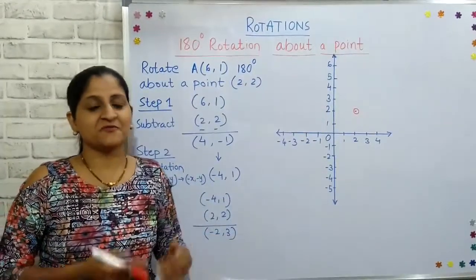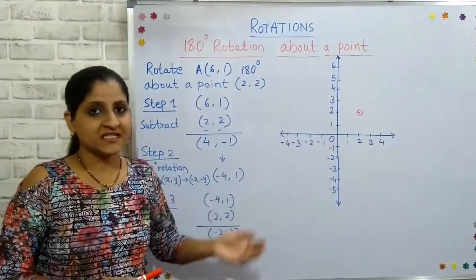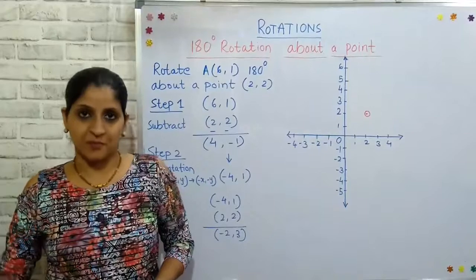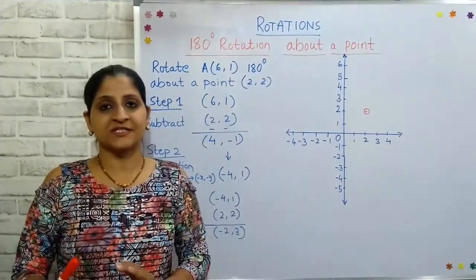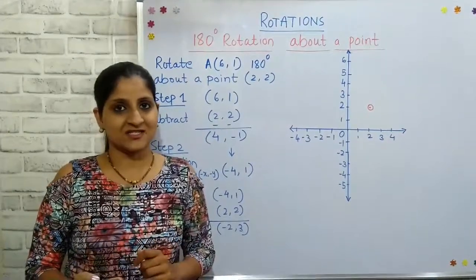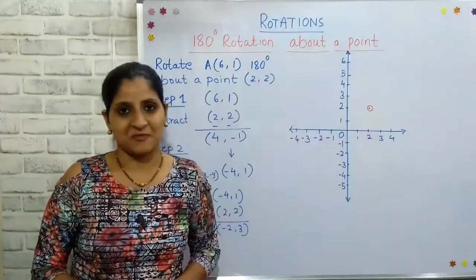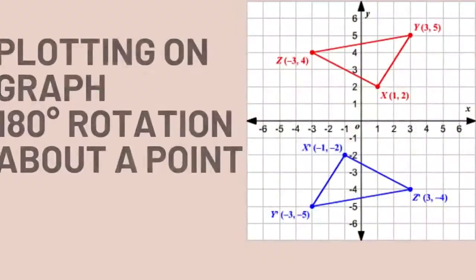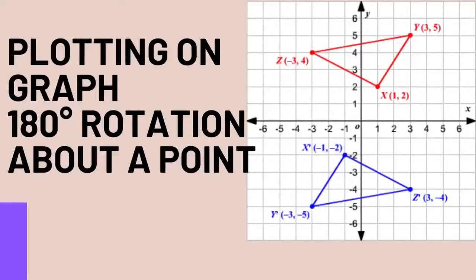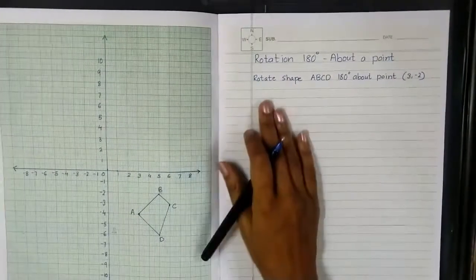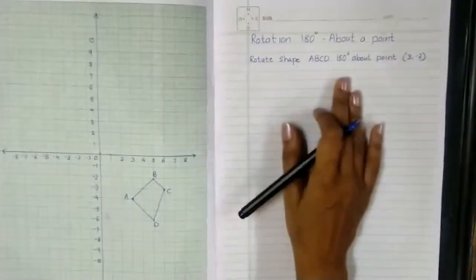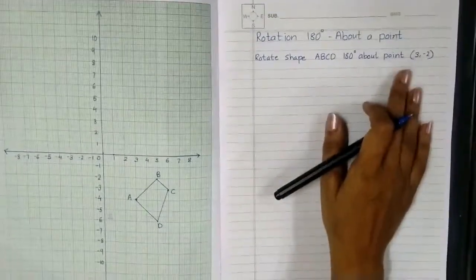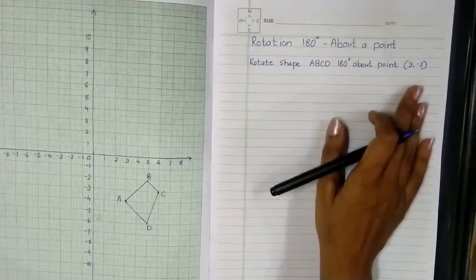Those are the steps involved while rotating a point 180 degrees about a given point. Now, how an entire figure will rotate 180 degrees about a point — that we will study on a graph paper. The example question here says: rotate shape ABCD 180 degrees about point (3, -2).